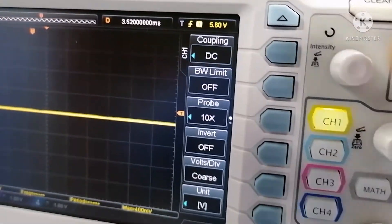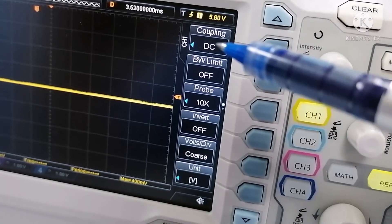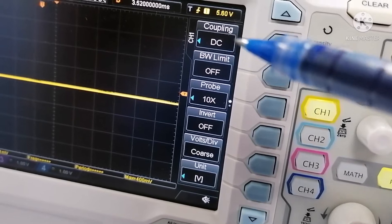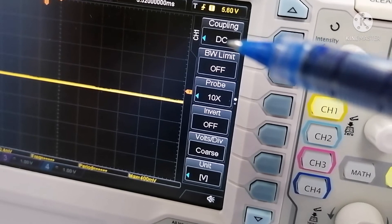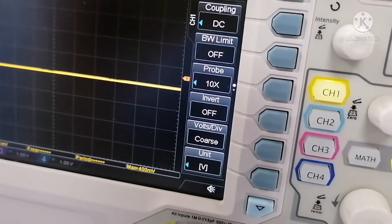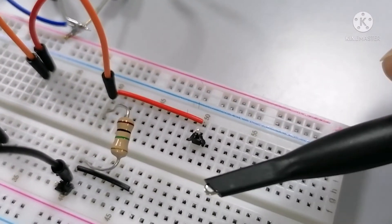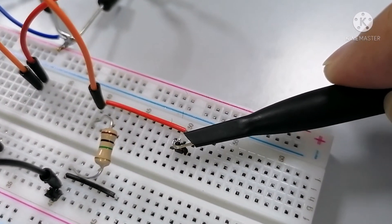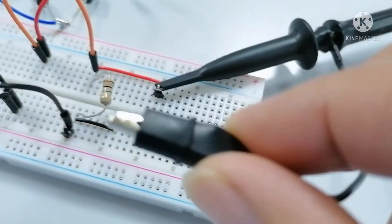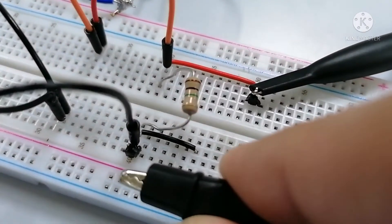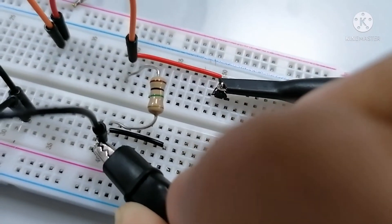And take note that I set my coupling to DC. Before it was AC because we measure the AC voltage. Now I change it to DC coupling because I will measure DC voltage. This is the positive side and the other one is to negative side. I have this terminal.